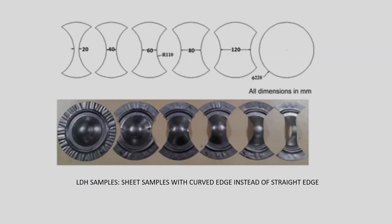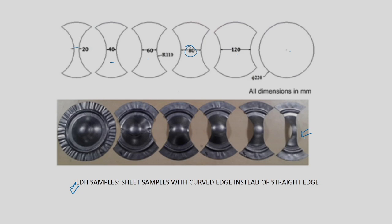Instead of rectangular or square samples, sometimes curved-edge samples are used — this is also an LDH sample but with curved edges instead of straight ones. For example, a 20 mm width gives negative minor strain, 60 or 80 mm gives plane strain, 40 and 60 mm are in between, 120 mm gives biaxial stretching, and 220 mm gives balanced biaxial stretching. Some deformed sheets are shown in photographs, and you can see a small neck where you must measure strain to get the forming limit strain.